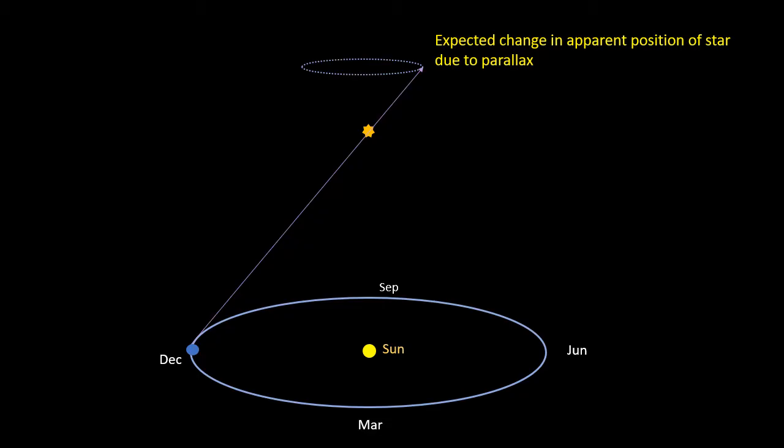And then if you go forward three months to March, then the star's apparent position has shifted. And then once again to September, you can see it has shifted again.